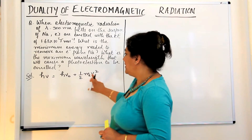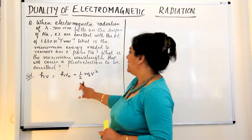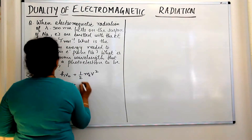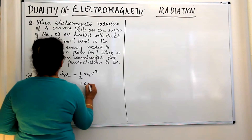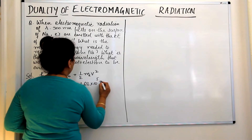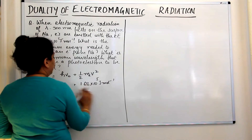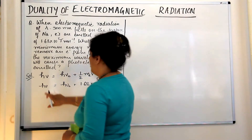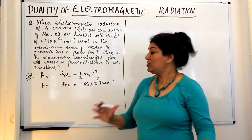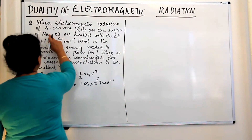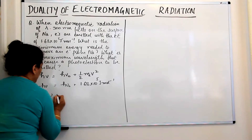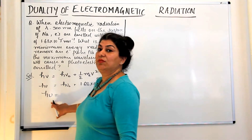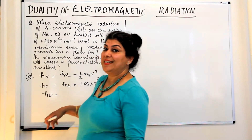The kinetic energy (½mv²) given to us is 1.68 × 10⁵ joules per mole. To find hν₀ for a mole, we first need to calculate hν for one photon. Since we have wavelength rather than frequency, and c = νλ, therefore ν = c/λ, and so hν = hc/λ.